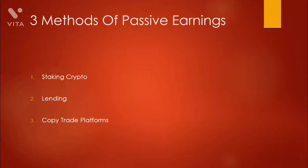Here are the three methods of passive earnings we are going to discuss in this course. The first one is staking cryptocurrencies, which means there are platforms where you can deposit your different types of cryptocurrencies like Bitcoin, Ethereum, and others. By staking them you are putting them in a side deposit and most of the time you don't have access to them for a limited period of time, but you will earn interest on that crypto.